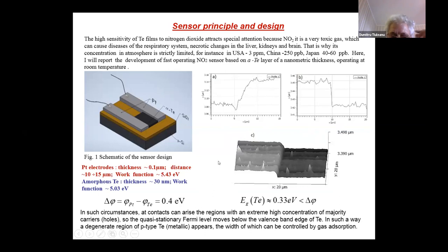In such circumstances, a contact can arise with an extreme high concentration of majority carriers. The quasi-stationary level moves below the valence band edge of tellurium, and in such a way, a degenerate region of p+ tellurium, that means metallic tellurium, can appear. The width of this layer can be controlled by gas adsorption.